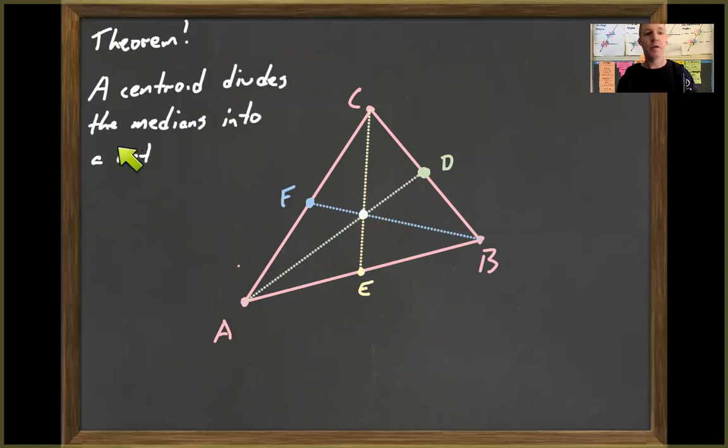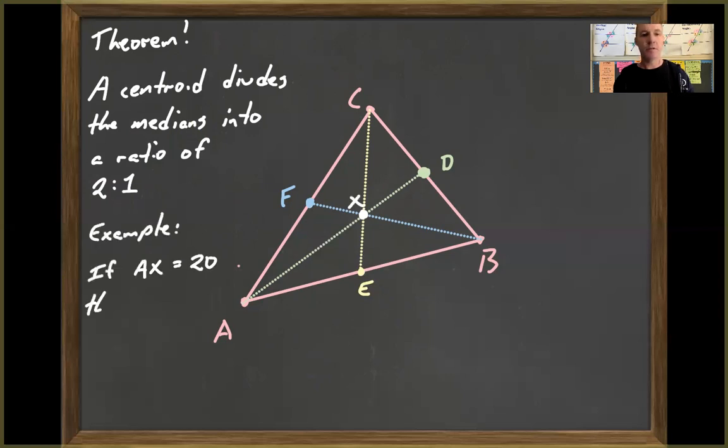So here's a theorem. A centroid divides the medians into a ratio of two to one. So it's our first little instance of ratios. And so ratios are, it's just expressing something that's part to part. So we're used to fractions. Ratios are a little different. So let's look at an example. So for example, if I labeled this centroid point X, and if this length were 20, if this were in a ratio of two to one, that means the longer part of this is going to have two parts. The shorter part is going to be one, one part.